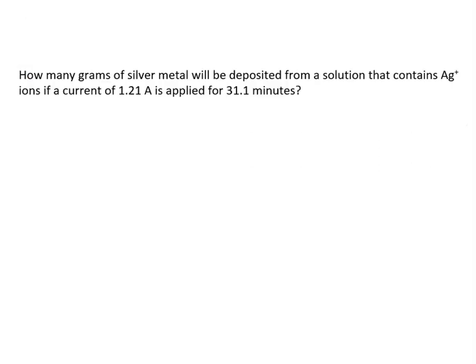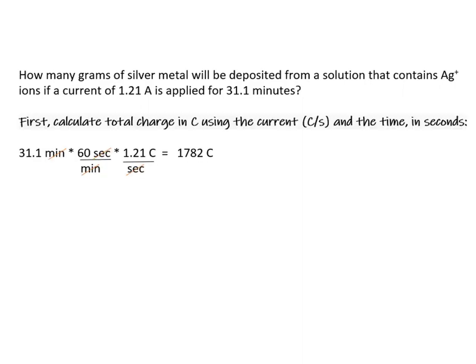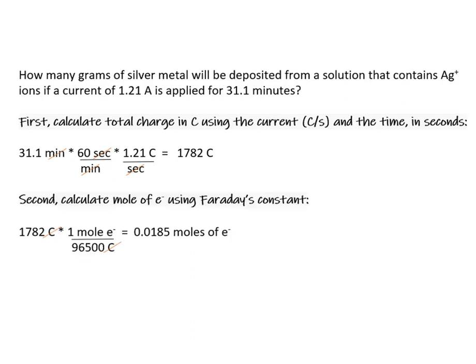Here, we are asked to determine the grams of silver that would be deposited from a silver solution with a current of 1.21 amps, or 1.21 coulombs per second, applied for 31.1 minutes. First, calculate the total charge in coulombs using the current in coulombs per second and the time — we end up with 1782 coulombs. Second, calculate the moles of electrons using Faraday's constant: 0.0185 moles of electrons.